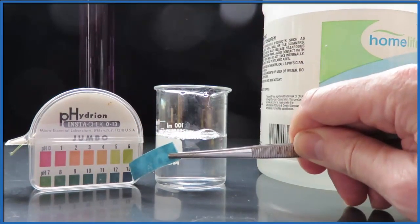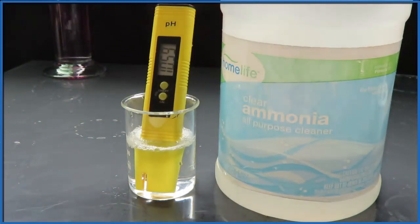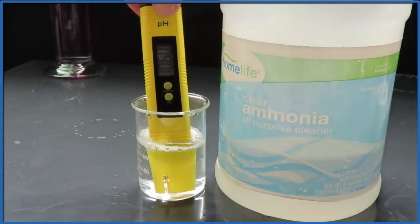We put our pH meter in the ammonia and it reads 10.6, so right between 10 and 11. That's the pH for household ammonia.